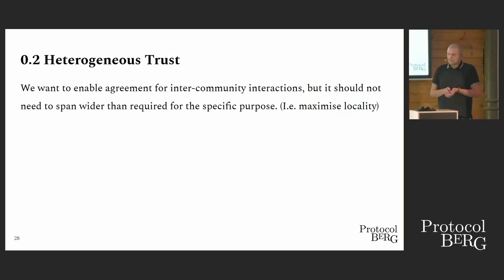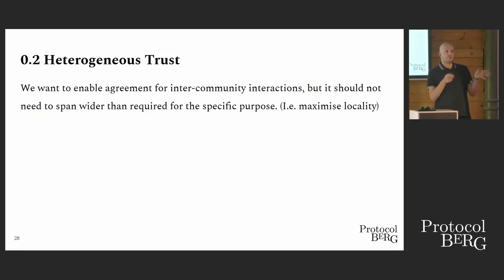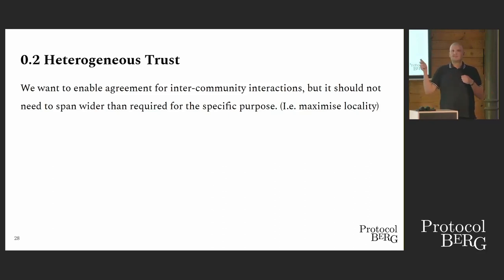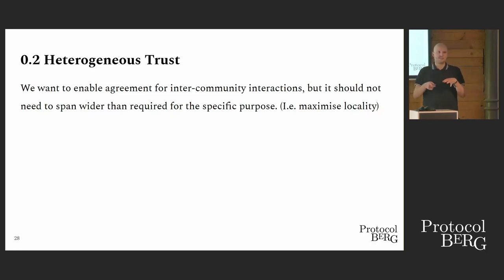We want to enable this agreement for inter-community interactions, but we want to be able to make this agreement as finely grained as possible — basically maximize locality of the agreement. If I have one community and I want to interact with some person from another community, either composing the trust that is between these two communities, or picking a third one that we both trust. So basically give us the smallest possible increments.